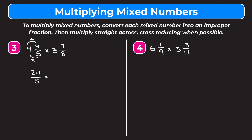Now we're going to see if we can cross reduce. We can only cross reduce the 24 and the 8 — we can divide them both by 8. 24 divided by 8 gives us 3, and 8 divided by 8 gives us 1. Now we multiply the numerators and denominators: 3 times 31 gives us 93 on top, and 5 times 1 gives us 5 on the bottom. Changing this into a mixed number: 5 goes into 93 eighteen times, 18 times 5 is 90 so we have 3 left over. So we get 18 and 3 fifths as our answer.